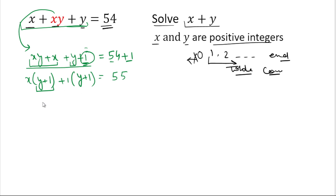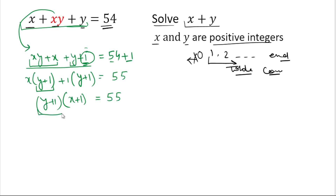On the right hand side, 54 plus 1 is 55. From the left hand side we can take y plus 1 as common, and in the other bracket we have x plus 1. So that equals 55 — the multiplication of the two factors, y plus 1 and x plus 1, equals 55.